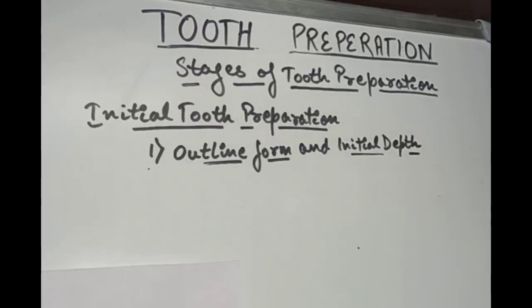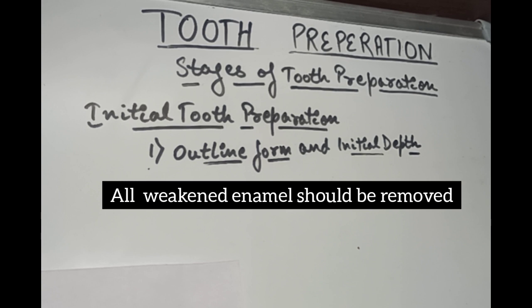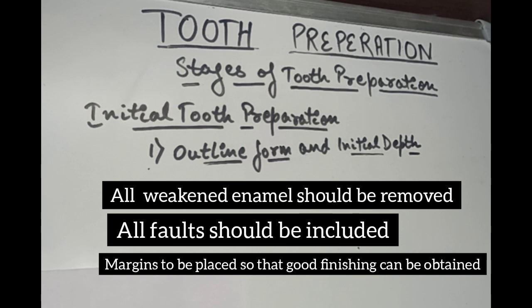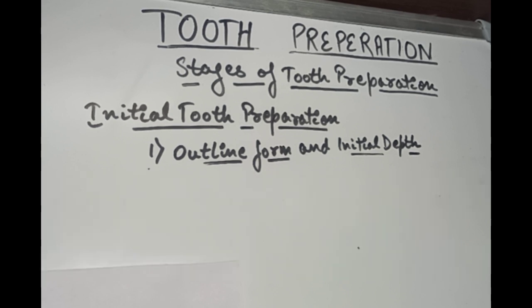The three general principles for outline form are: all friable and weakened enamel should be removed; all faults should be included; and all margins should be placed in a way that good finishing of the margins of restorations can be done. Friable enamel is demineralized enamel that needs to be removed because the bonding agent is not as effective, and undermined enamel needs to be removed because there is no underlying dentine to support it.